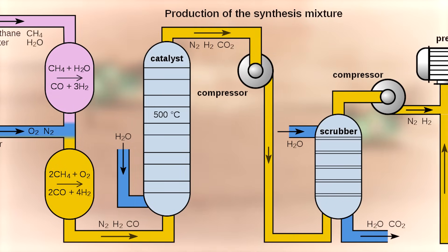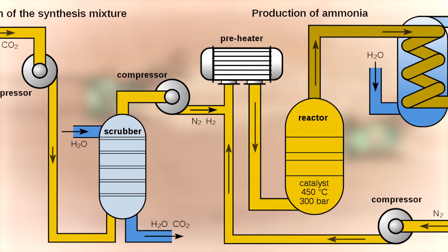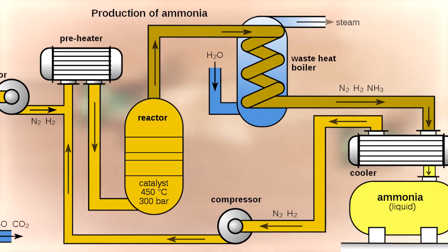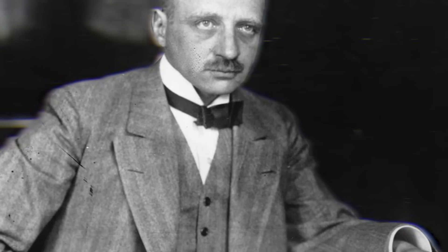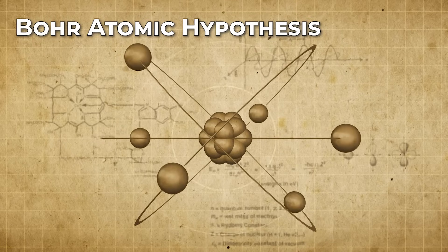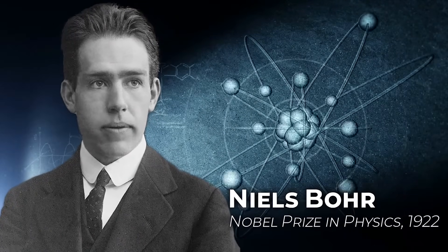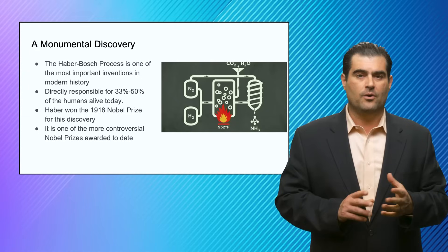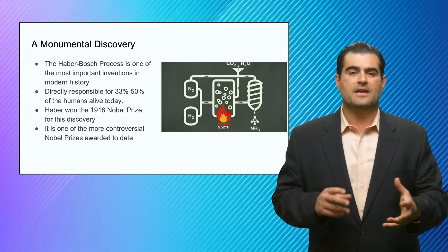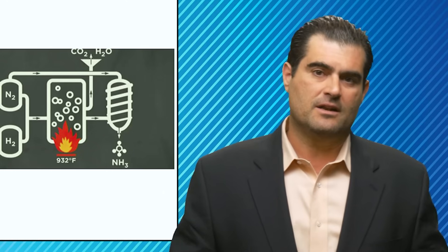This fertilizer production method is responsible for almost half of the food that we eat on Earth. And so it led to the 1918 Nobel Prize. And it's controversial, but not for the scientific reasons that say the Bohr atomic hypothesis shown here is responsible for controversy, because that model is actually wrong. The atom isn't like a little tiny solar system. So it's different than that type of a blunder or mistake by the Nobel Prize committee.